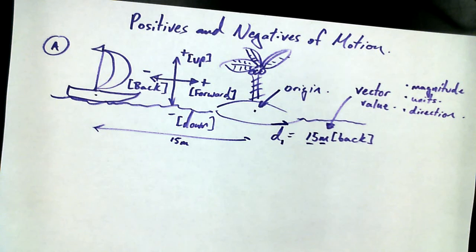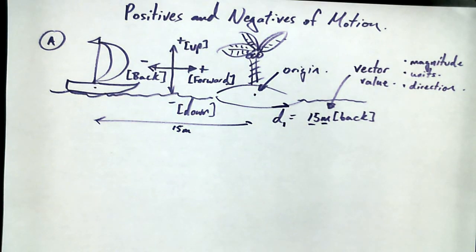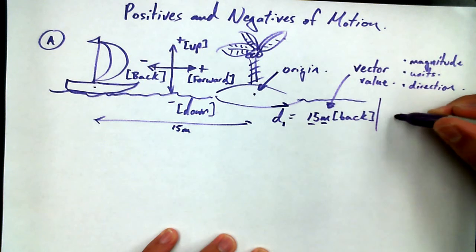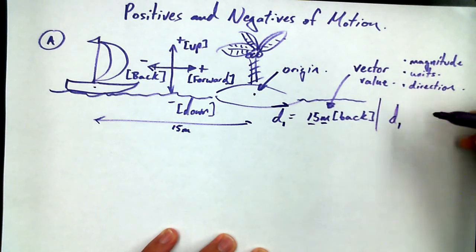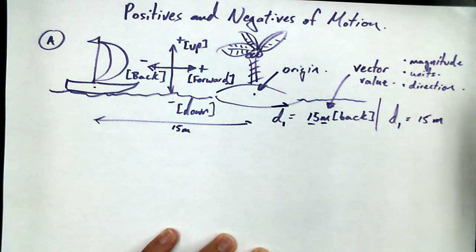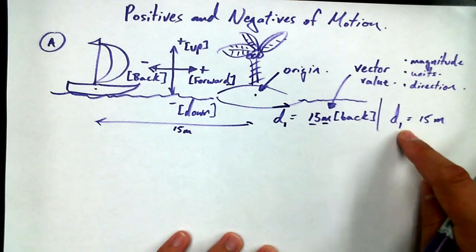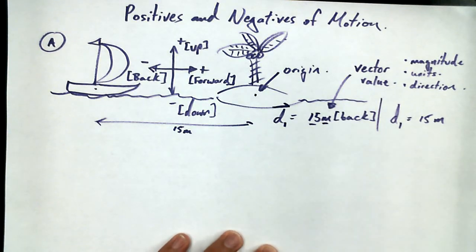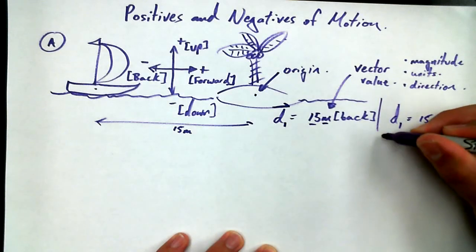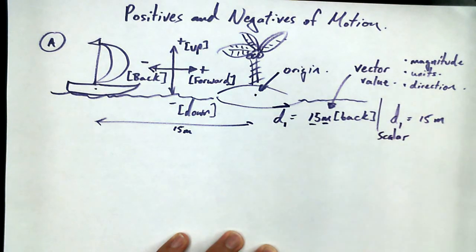If I were to have said not the position is 15 meters backwards from the island, but I were to say this boat is a distance of 15 meters from the island, what's the difference between position one and distance one, as I've expressed it? One has direction and one doesn't. They both got magnitude and units, but one doesn't tell me in which direction relative to the island. So we would call this guy a scalar. Scalar doesn't have direction. This is a scalar. And scalar properties only have magnitude and units.